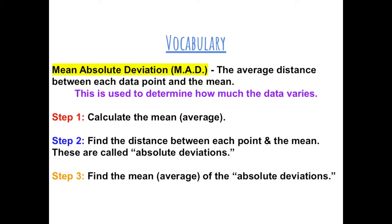Here are the steps. Step 1: calculate the mean, which is the average. Then find the distance between each data point and the mean — these are called absolute deviations. Then find the mean, or average, of the absolute deviations.